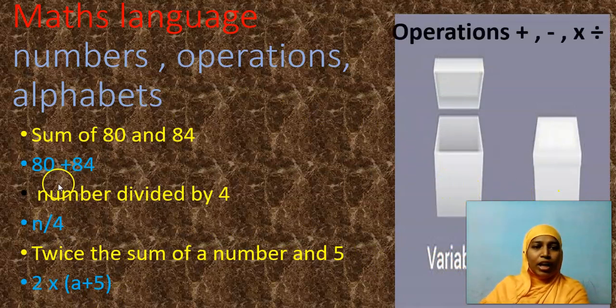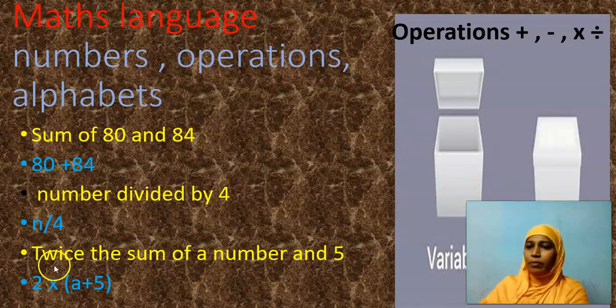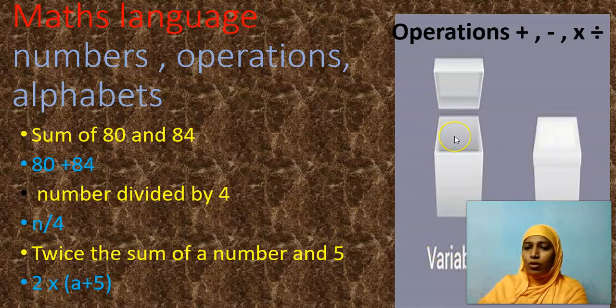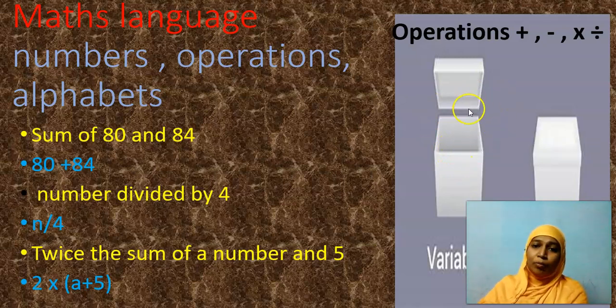Along with that, we have operations: plus, minus, division, multiplication. We represent these variables like an open box. Why? This open box makes us flexible. Makes it flexible that we can put in one value and we can take it out, and we can place another value and we can take it out.